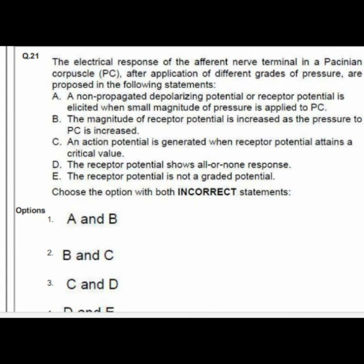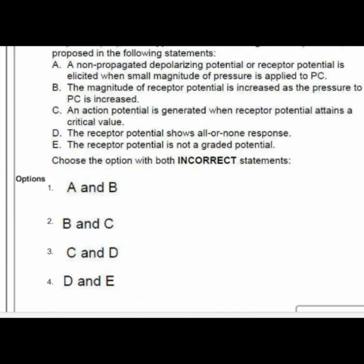Question 21 concerns electrical responses of the efferent nerve terminal in a Pacinian corpuscle (PC) after application of different grades of pressure. We must identify the incorrect statement. Option 4 is correct: D — the receptor potential shows all-or-none response — and E — the receptor potential is not a graded potential — are both incorrect statements.